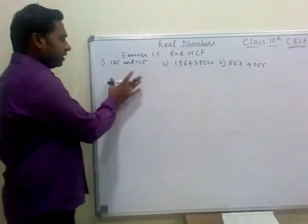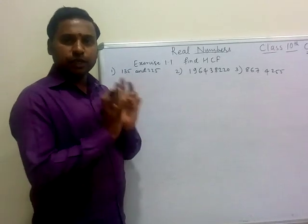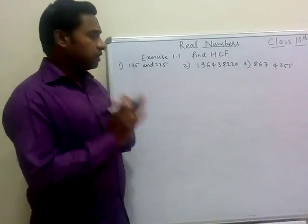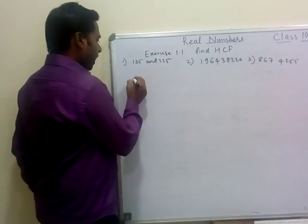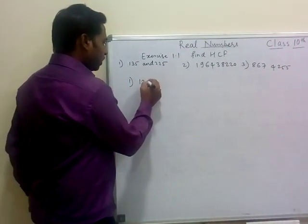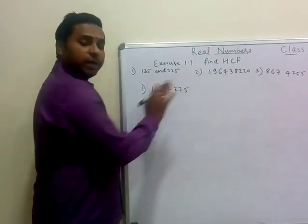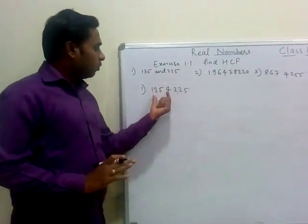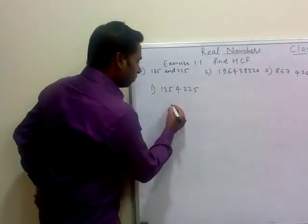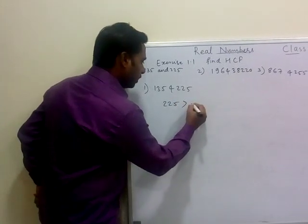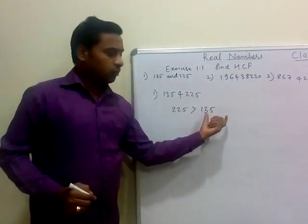We have already seen yesterday how to solve using Euclid's division algorithm, so let us continue. For the first one we have 135 and 225. We compare these two numbers — 225 is greater than 135.